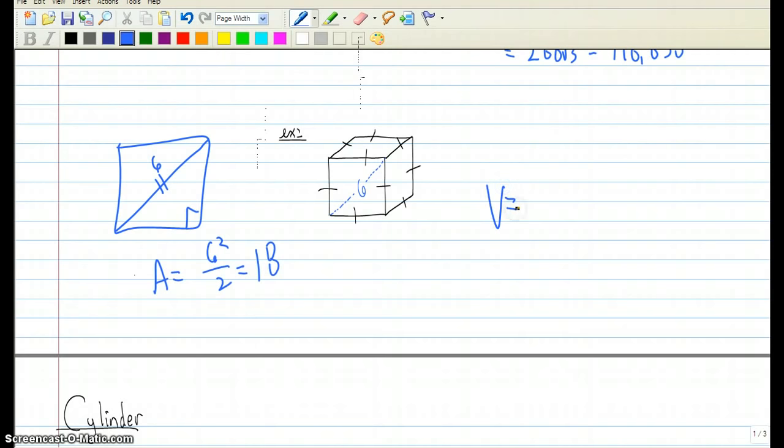So the volume of our prism here is 18 times the height. The height is the distance going from this front base to that back base. In other words, it's the length of this side, which would be the length of one side of that square. So if we look at this triangle, a 45-45-90,